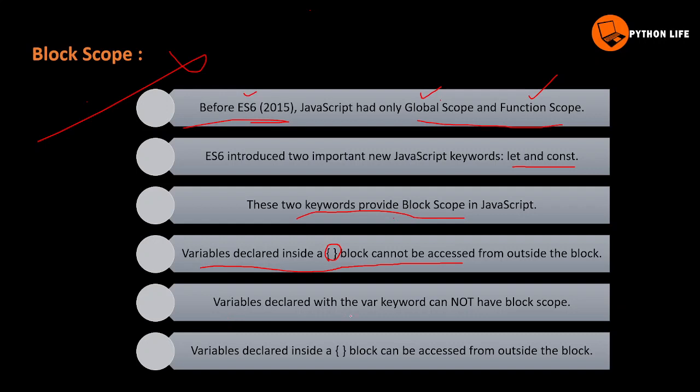Variables declared with the `var` keyword cannot have block scope. If you use a `var` keyword inside a block, it can be accessed from outside the block. Variables declared with `var` are considered global or local variables, not block-scoped variables. Variables declared inside the block with `var` can be accessed from outside the block.